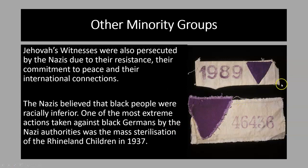There were also other minority groups persecuted by the Nazis. One notable group are the Jehovah's Witnesses. The Nazis didn't like them because they refused to accept total Nazi power, saying they were first answerable to God — so they would refuse to do the Heil Hitler salute, for example. They were also anti-war and had international connections. Quite a lot of Jehovah's Witnesses were sent to concentration camps — about 6,000 by 1939 — and at the end of the war over 1,400 had been murdered. They were forced to wear purple triangles.